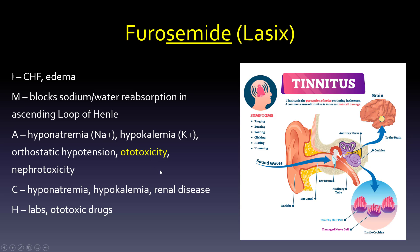Considerations for furosemide: we don't want to give a drug that causes hyponatremia or hypokalemia to a patient who is already hyponatremic or hypokalemic. With renal disease, electrolyte imbalances are a real concern. To help the patient: confirm labs are where we want them, and be very careful when combining with other ototoxic or nephrotoxic drugs to avoid additive effects.